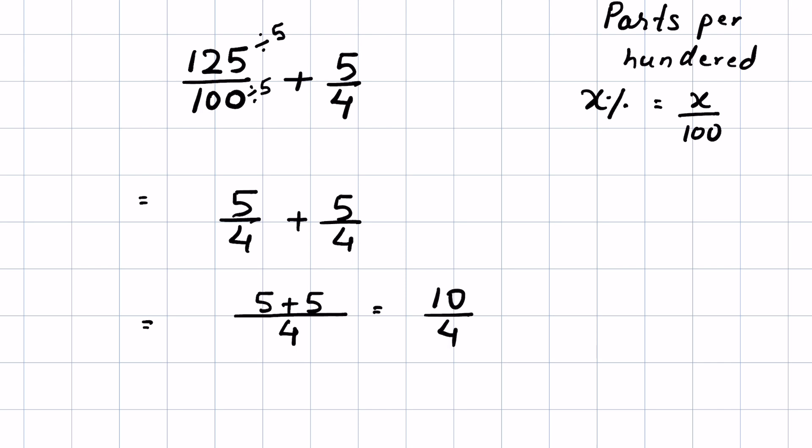You can reduce this fraction again by dividing both numerator and denominator by the same number. 10 divided by 2 is 5 and 4 divided by 2 is 2. So the answer is 5 upon 2.